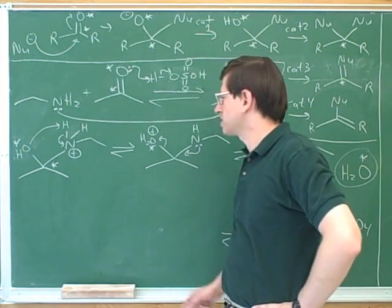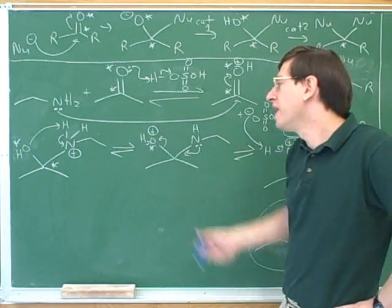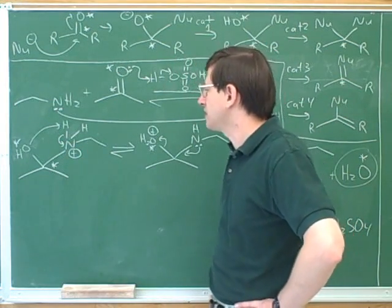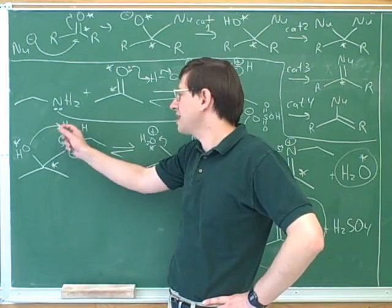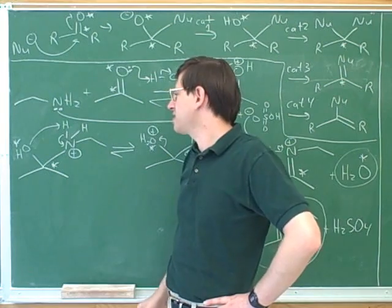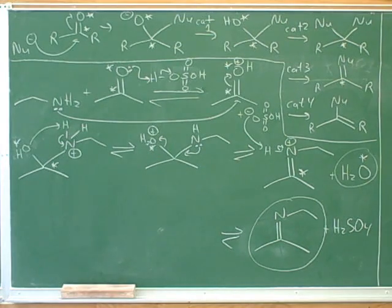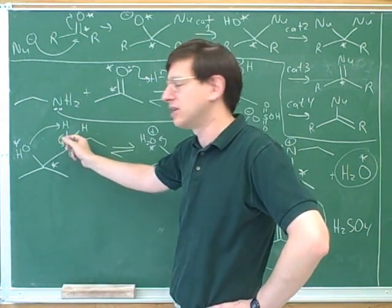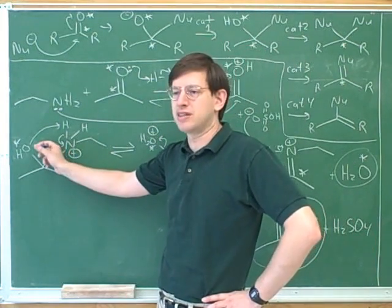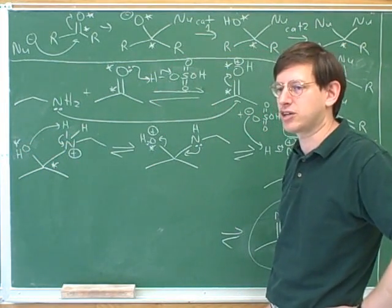What was the purpose of this proton transfer, moving the proton from the nitrogen to the oxygen? So the water can leave — it makes it into a better leaving group, and gets rid of the positive charge on the nucleophile. We could have shown this in two steps: the sulfate taking the proton from the nitrogen and then giving it to the oxygen. But it saves time to just show the oxygen taking it directly from the nitrogen. This mechanism is so complicated that it's permissible to combine this into one step.